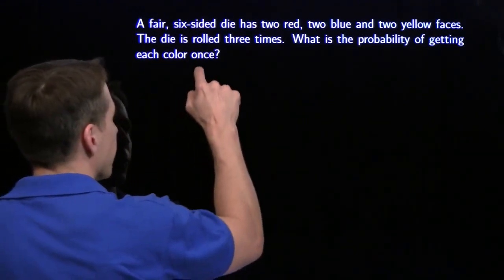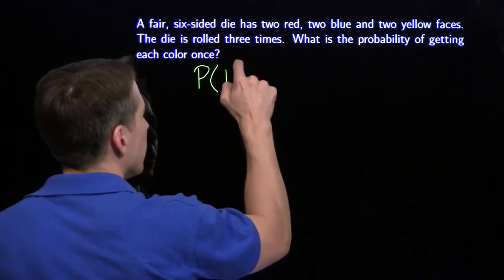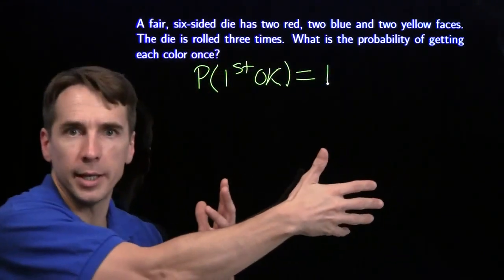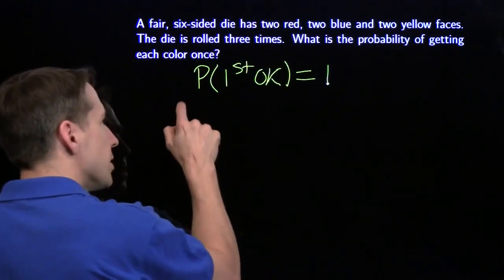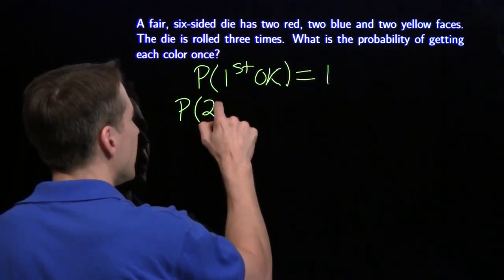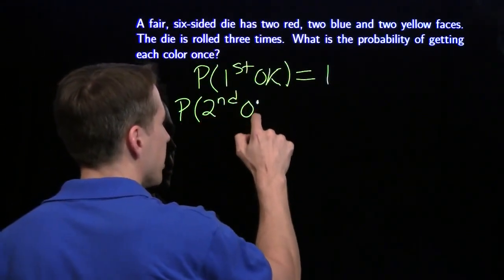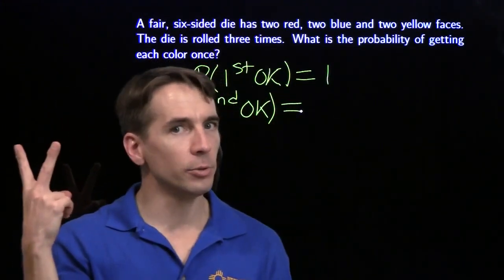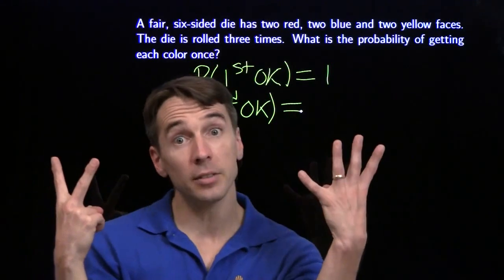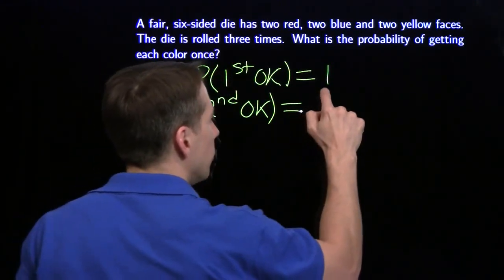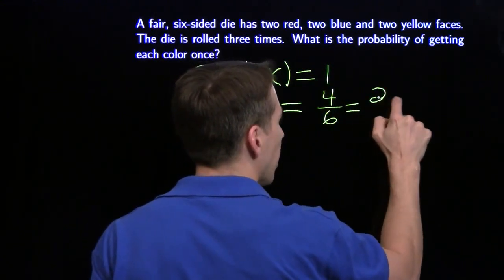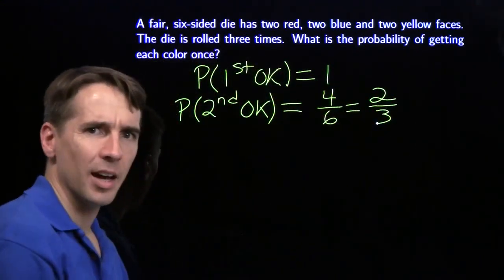The first step is that first roll, and that first roll is always okay. It doesn't matter what we roll, we get to go on to the next step. Now, for the second step, we have to make sure we don't get the same color as the first step. So the first step gives us some color, that knocks out two faces we can't get on the second step. That leaves us four good faces for the second step out of the six total. This roll gives us a two-thirds probability of getting past the second step.